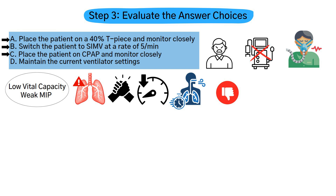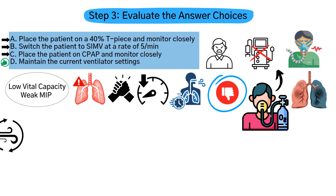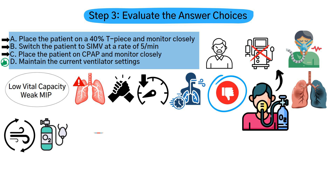Option C, CPAP, is also inadequate support. CPAP provides oxygenation support but does not assist ventilation, making it inappropriate for someone with impaired respiratory muscle strength. Option D, maintain the current ventilator settings, is the best choice. The patient is well ventilated and oxygenated, but not yet ready for weaning due to poor respiratory mechanics.